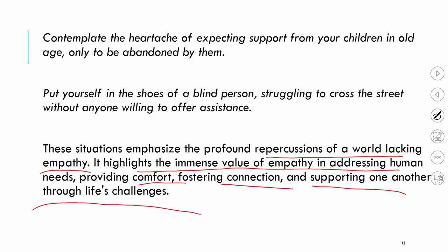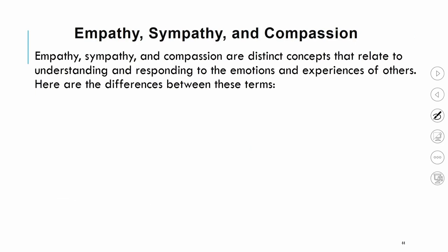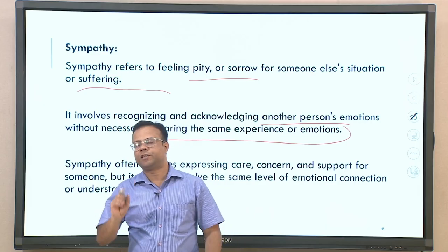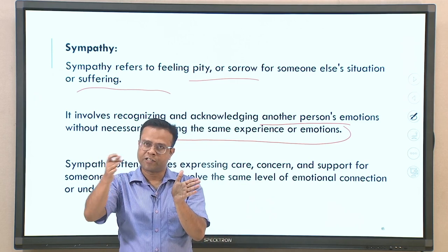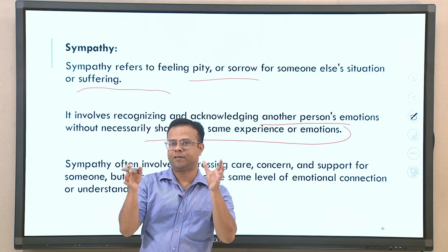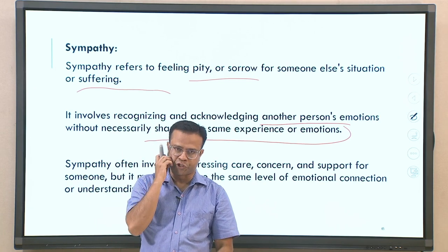There are three terms often used synonymously but which are actually different: empathy, sympathy, and compassion. Sympathy refers to feelings of pity and sorrow for someone else's situation or suffering — you feel bad for somebody going through a bad phase. It involves recognizing and acknowledging another person's emotions without necessarily sharing the same experience. In empathy, you share their experience and try to identify with their situation; in sympathy, you may not share their emotions — you just understand and show concern for their situation.